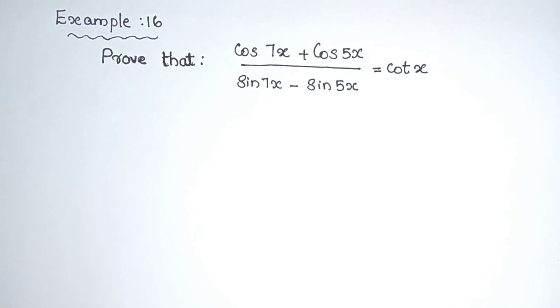Example 16. Prove that cos 7x plus cos 5x divided by sin 7x minus sin 5x is equal to cot x.